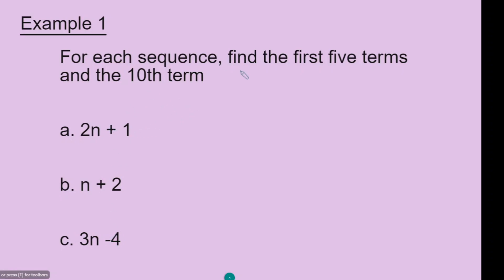Remember, to find the first term you have to put n equal to 1. So 2 times 1 is 2, plus 1 is 3. That's the first term. To find the second number in the sequence, you put n equal to 2. So 2 times 2 is 4, add 1 is 5.